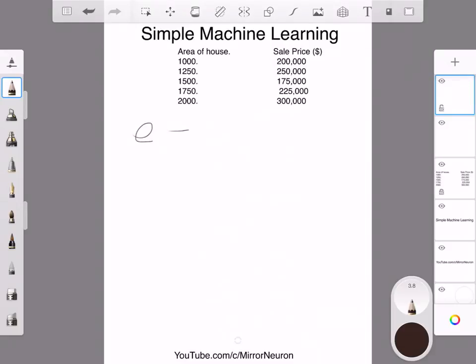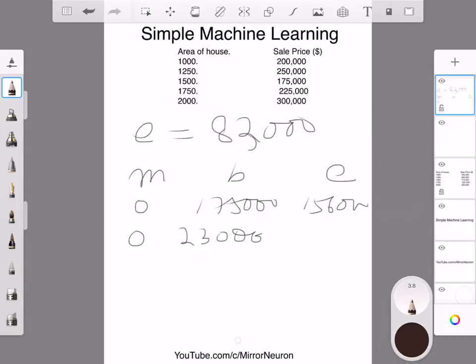If I pull my chart again—my m, b, and e. First attempt: m was zero, b was 175,000, and I got an error of 156,000. Second attempt: m=0, b=230,000, and I got an error of 96,000. In my third case, m became 100 (that was the slope I took), my intercept was 75,000.